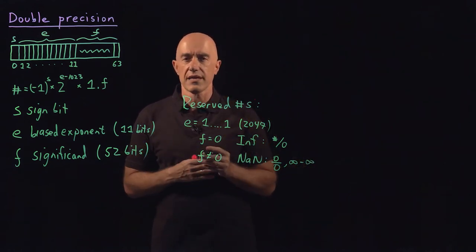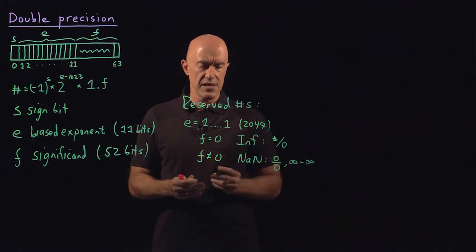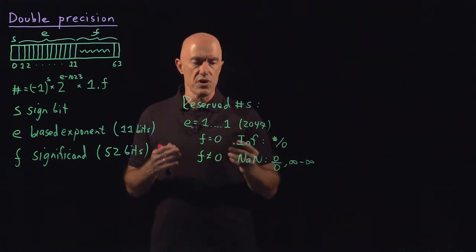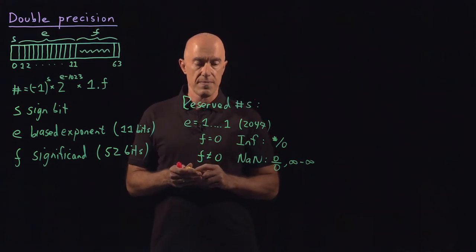Not a number would be, say, a zero divided by zero or an infinity minus infinity. This is what's called an indeterminate number. It could be anything. And in the computer, we represent that as NaN, not a number.